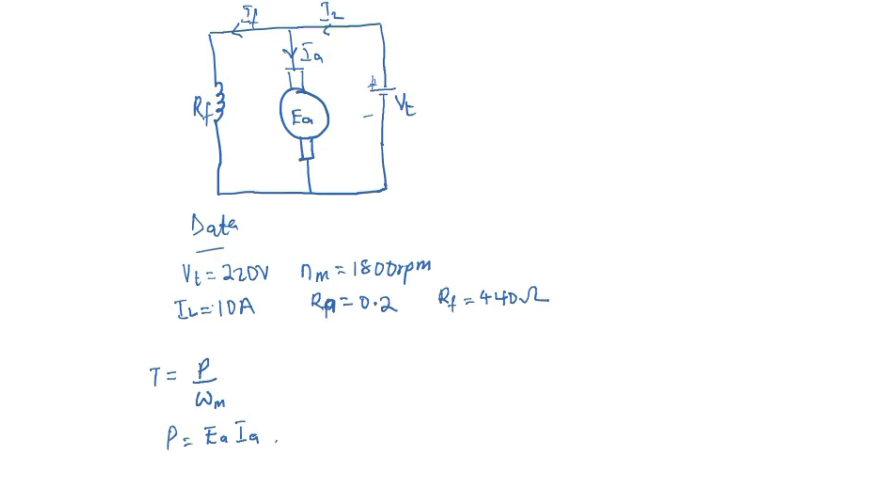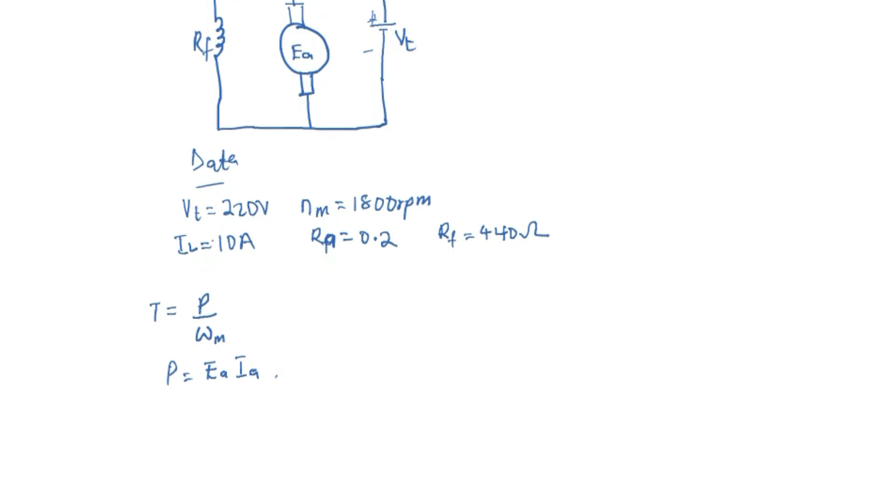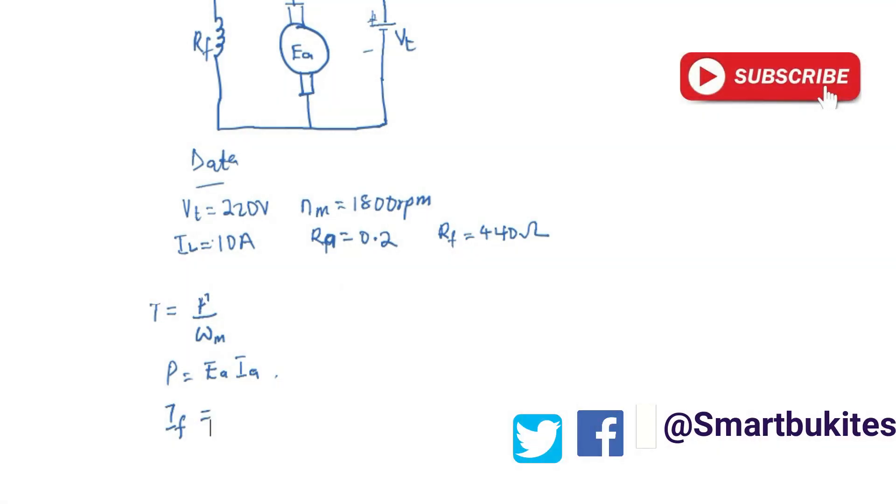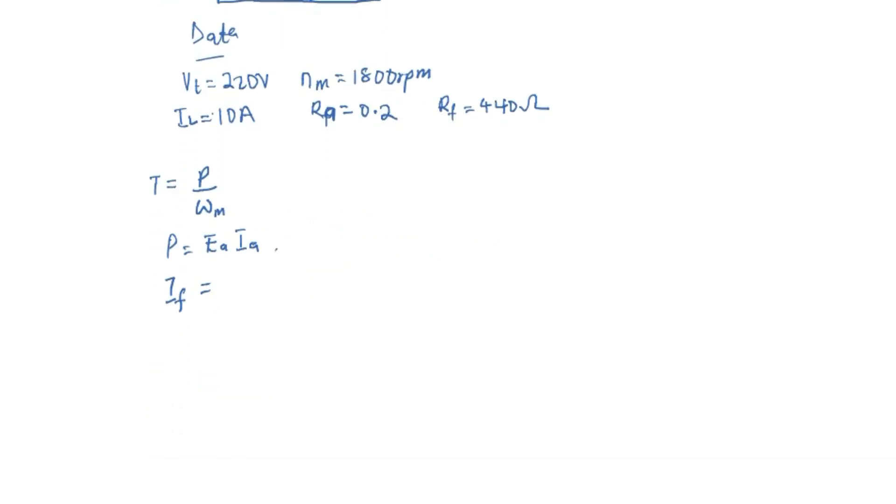So to find IA we first have to find the current through the field winding. So IF, you can see from the diagram that since it is a shunt motor, VT is the same voltage across this branch as well as across this branch. So IF is going to be VT over RF, and this is 220 volts over 440.